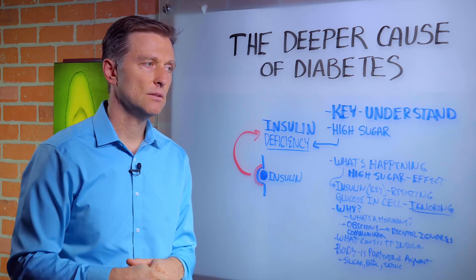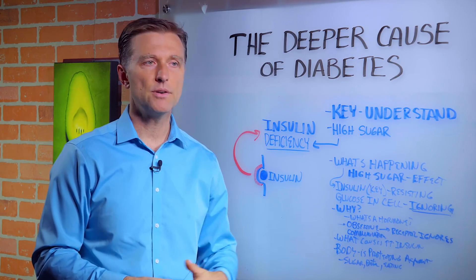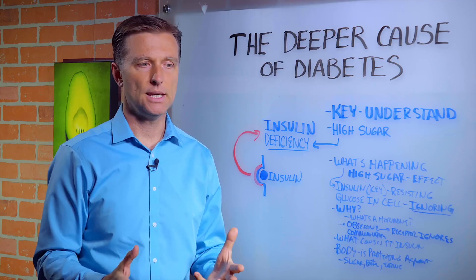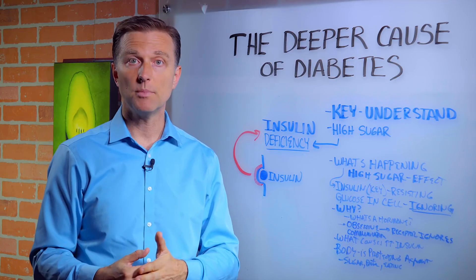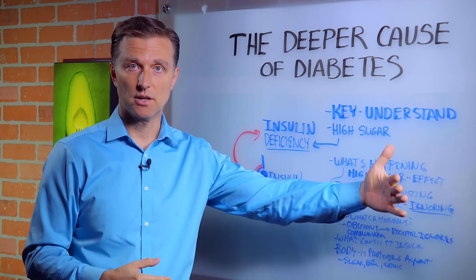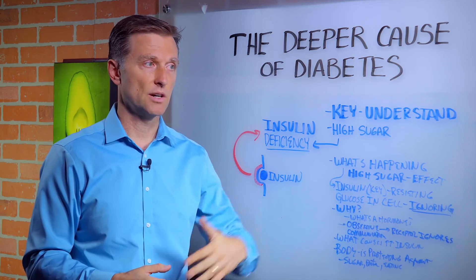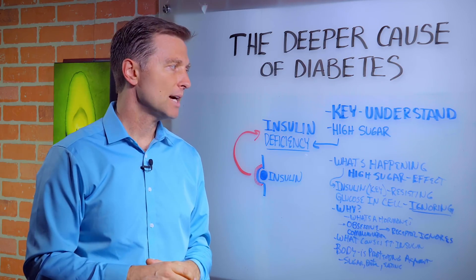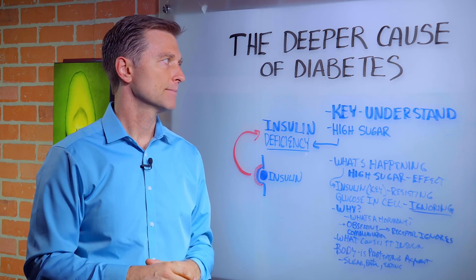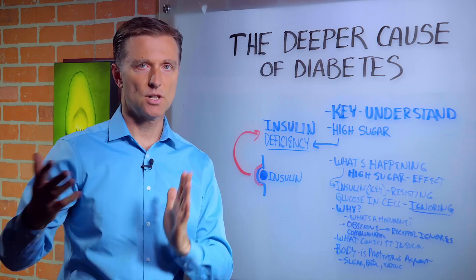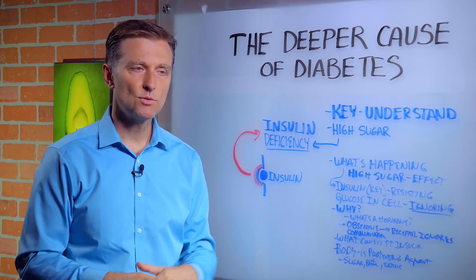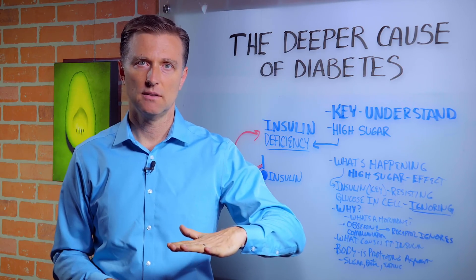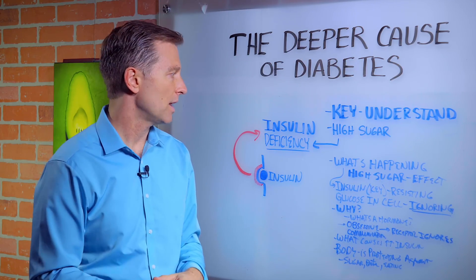Typically, when you think about diabetes, you always think about high blood sugar. A1c is an average of three months of high blood sugar. You do a fasting blood sugar — that's how you diagnose diabetes. Diabetes is high sugar. But let's go deeper. What causes the high sugar? That's the question.